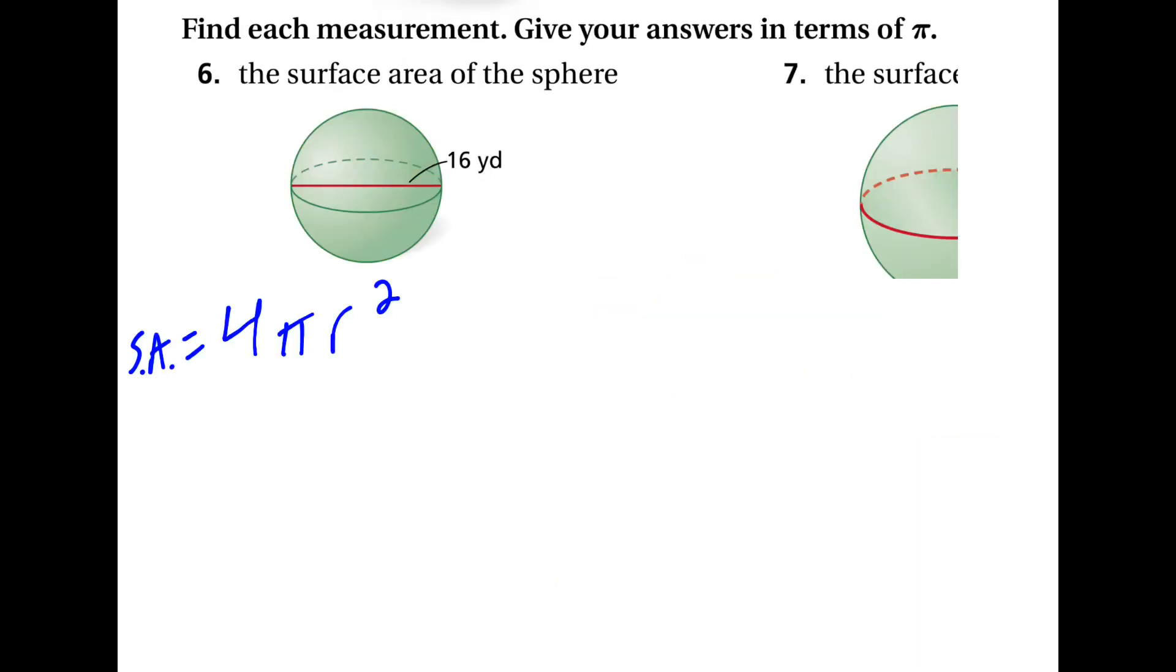For number 6, we just plug into a different formula. We have to recognize that 16 is the diameter, so the radius is half of that, which is 8. So we plug that in here. We have 4 times pi times 8 squared. So this gives us 4 times pi times 64. And if I take 64 times 4, I get 256 pi. So this is yards cubed, and that's the surface area.